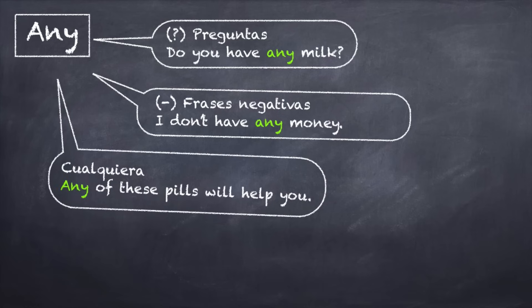'Any' can also mean 'cualquiera' — for example, 'Any of these pills will help you.' So, to summarize: 'some' is for positive/affirmative phrases. 'Any' is for negatives. 'Some' is only used when asking for or offering something; for any other type of question, use 'any' — always.